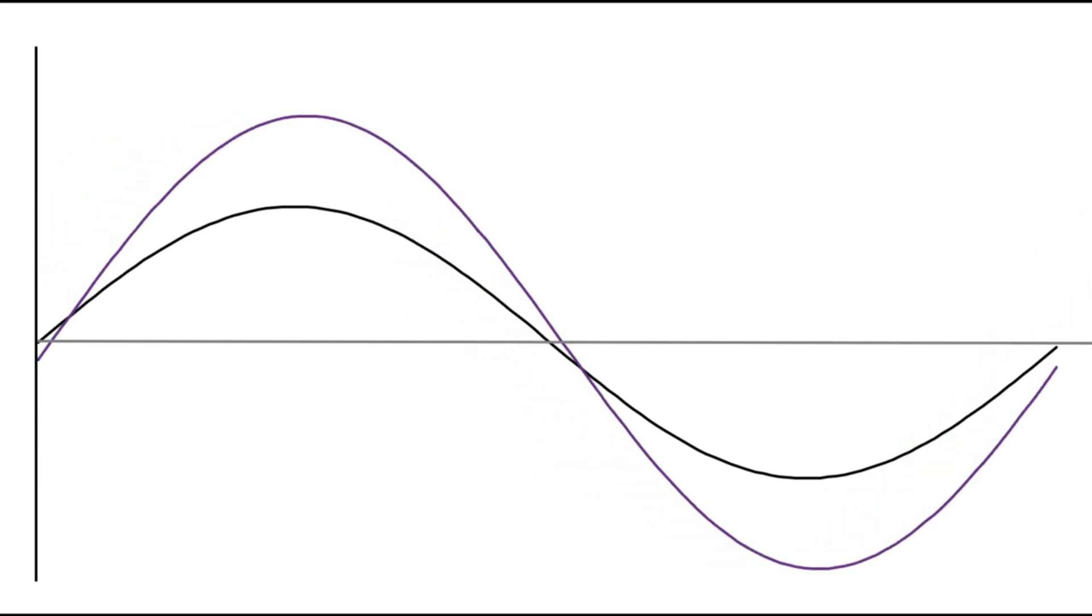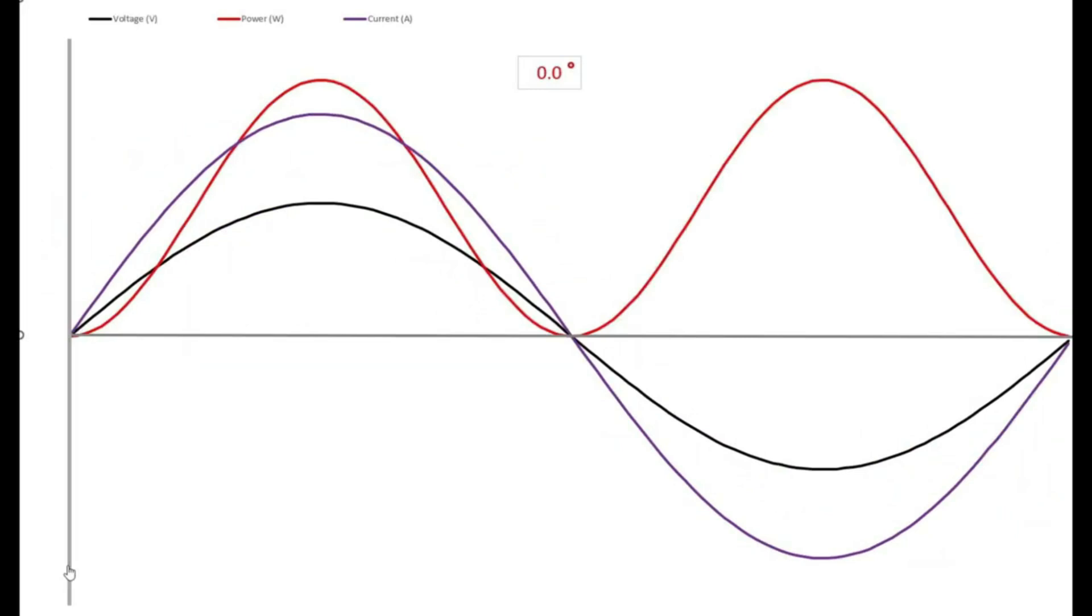Now let's take a look at this graph. Right now we've got voltage and current on this graph. Now let's add a third line, a red line. This is power, which is calculated by multiplying current times voltage. Here you can see that power is always positive. But what happens when the current and voltage become out of phase? Let's put this graph in motion and show different amounts of phase shift. We'll see what happens with power.